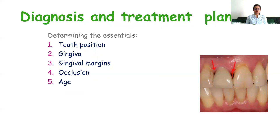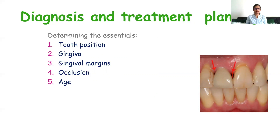Gingival margins: it is always preferred to place the margin at the enamel and away from the gingiva. But if carious lesion, defective enamel, gingival recession, or root exposure is present, then we can place the margin subgingivally. Next is occlusion — occlusal relations, heavy functions, or parafunction play an important role in placing laminate veneers. Regarding age — in cases of worn-out teeth, care should be taken to preserve the existing enamel because it may cause improper bonding.